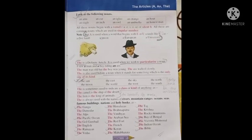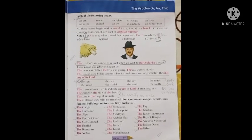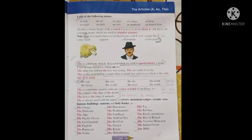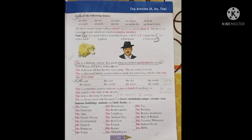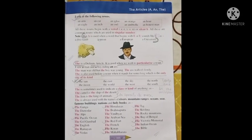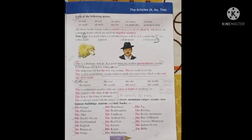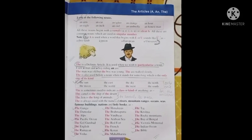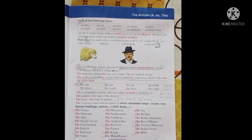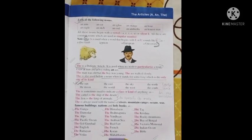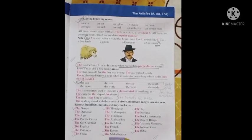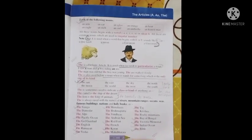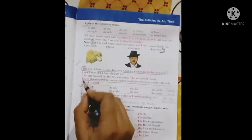The is a definite article. It is used when we wish to particularize a noun. I saw a man and a boy riding an ass. The man was old but the boy was young. The ass walked slowly.